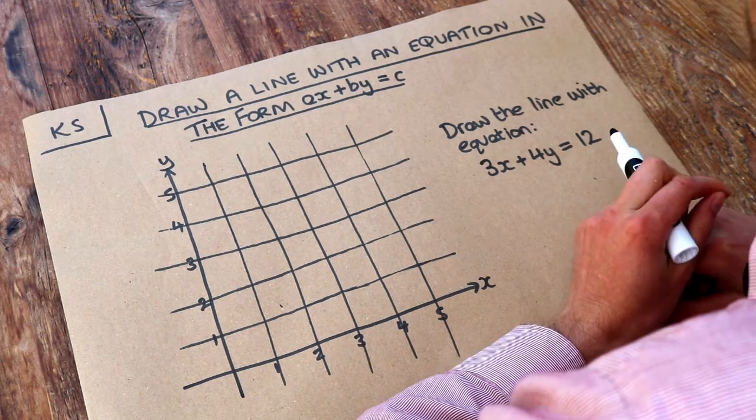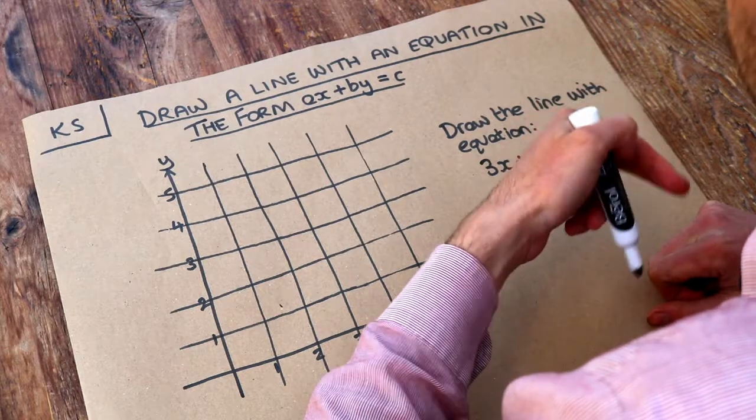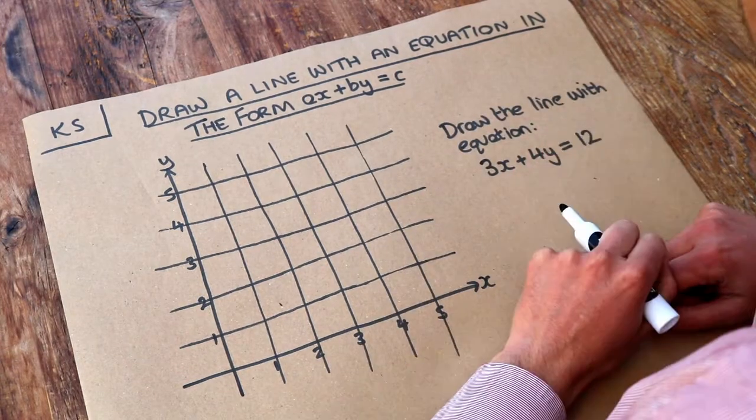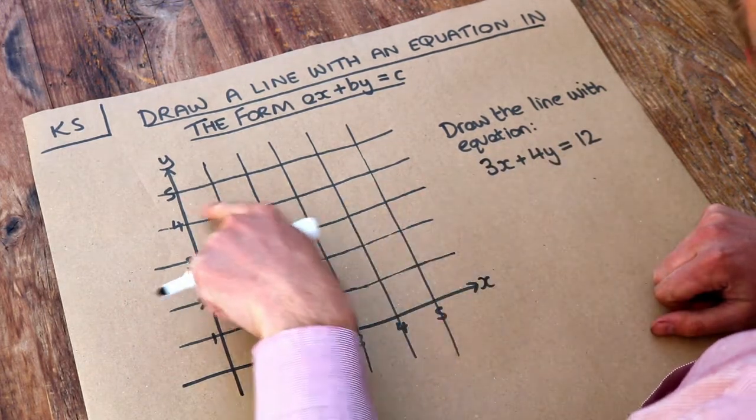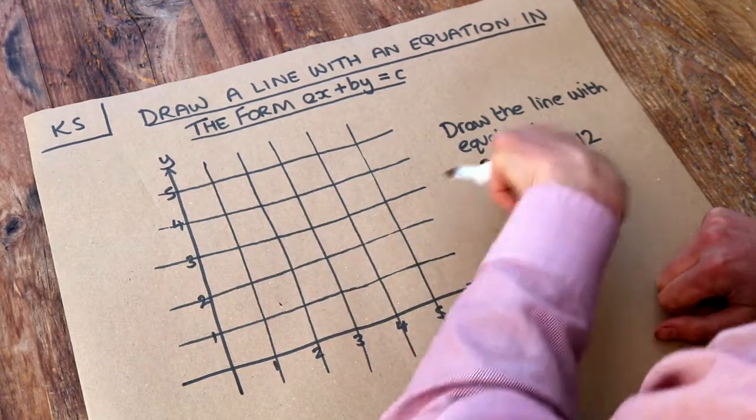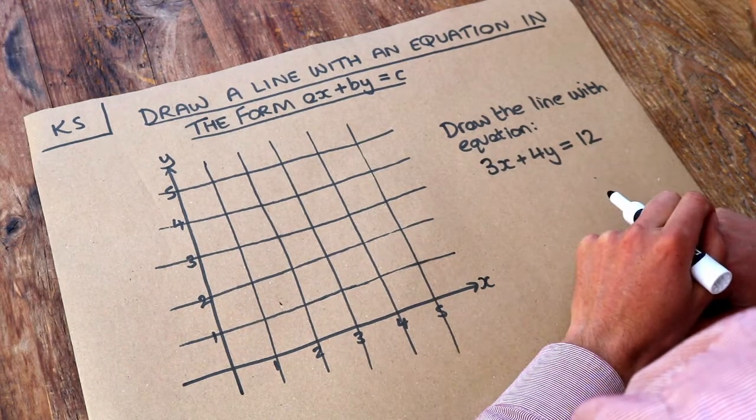In previous videos we explored how to draw lines of the form y equals mx plus c. Remember, in general, the link between a drawn straight line and its equation is that the line consists of all points which satisfy that particular equation.